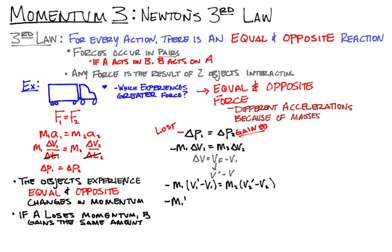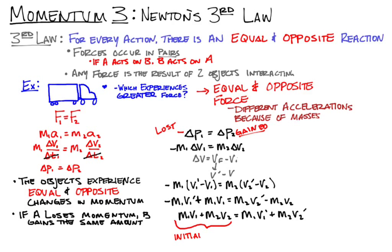So, we're going to distribute the masses through there and remember about that negative sign. And we're going to put all the initial velocities on one side and all the final velocities on the other side. All we're doing is subtracting them over. Now, if we look at the left side of the equation, that's the initial momentum of each object. The right side of the equation is the final momentum of each object. So, what we have is the initial momentum of our system is equal to the final momentum of our system. This is a big deal.